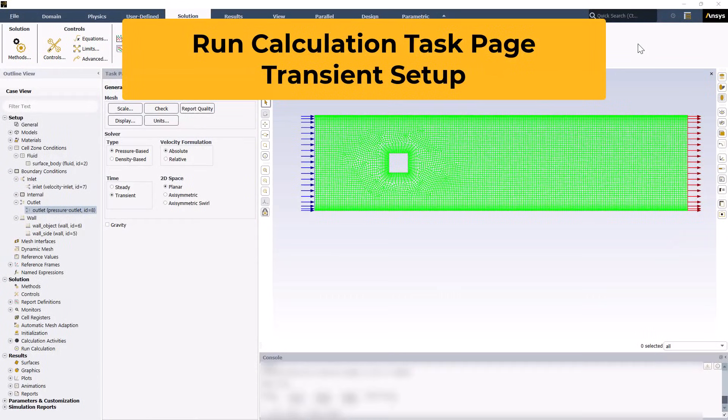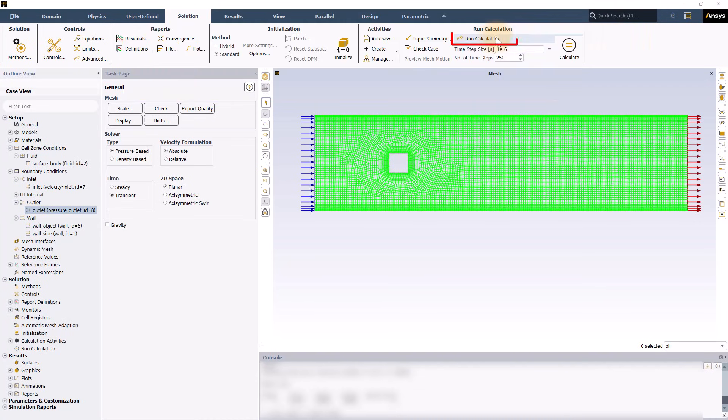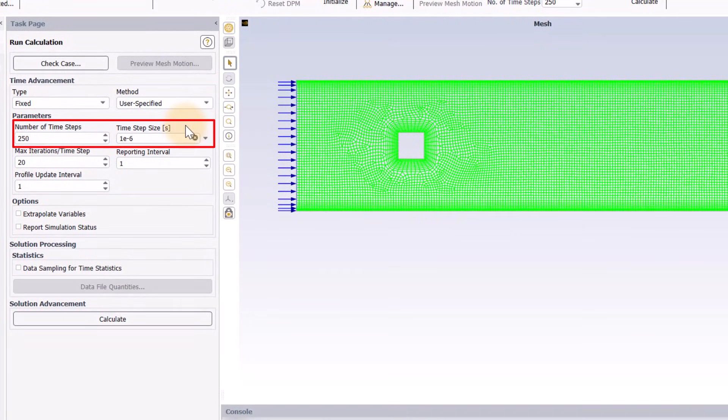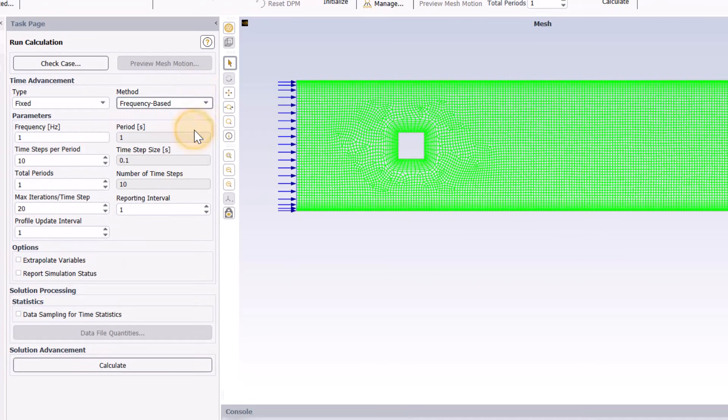For transient problems, I almost always like to open the Run Calculation task page by clicking Run Calculation here in the ribbon. Sometimes the time step size and number of time steps are all you need to enter, but there are also some settings in the task page that you should know about. Starting at the top, there are two options available for defining the time step size, fixed and adaptive. If you choose fixed, you have additional options to select how the fixed time step is defined. The most common is user specified, which is what will be used here, but there are also options to choose a period or frequency based time step. These are especially useful for rotating machinery applications, in which you can enter the period or frequency of rotation, the number of time steps per period, and the total number of periods.